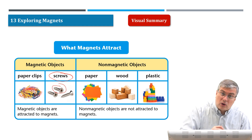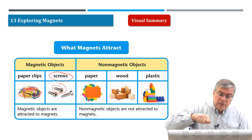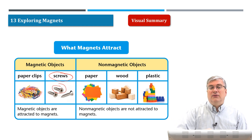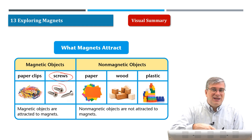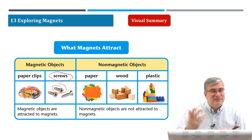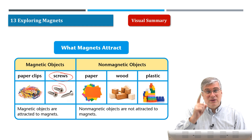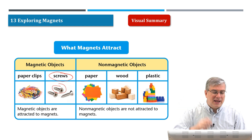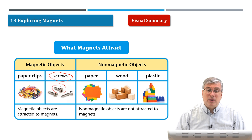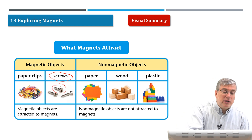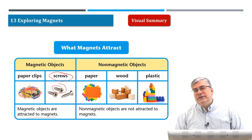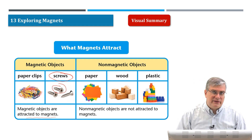You use a screwdriver to put a screw into wood and you turn it. It's different from a nail — with a nail, you use a hammer to put it into the wood. Screws can be used again and again. Screws are made of metal. Paperclips are made of metal. Nails are made of metal. So usually, metal objects are magnetic. Magnetic objects are attracted to magnets.